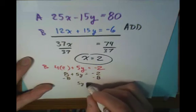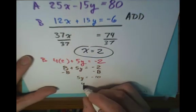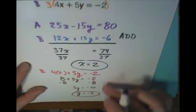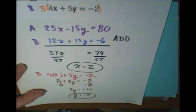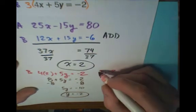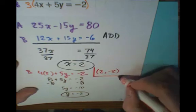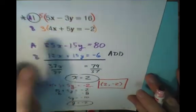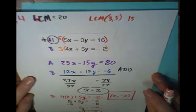So my ordered pair for my final answer is going to be 2, negative 2. Put it in parentheses to indicate the ordered pair. And as always, I can check my answer by plugging it back into one of the original equations.